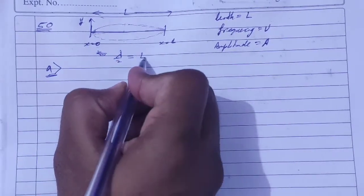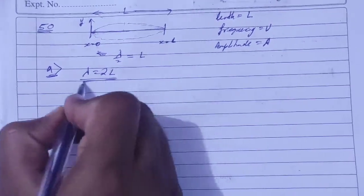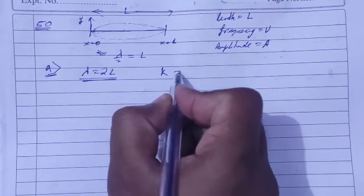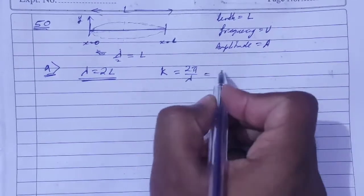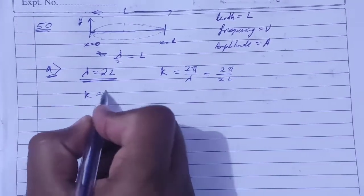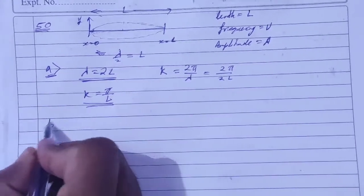The wavelength, lambda is equal to 2L. The second question is what is wave number. k is equal to 2 pi upon lambda, which is 2 pi upon 2L. So k is equal to pi by L. First question is done.